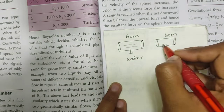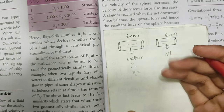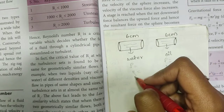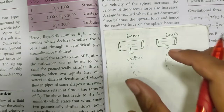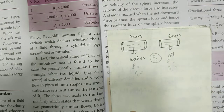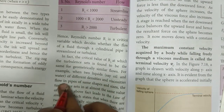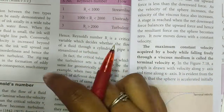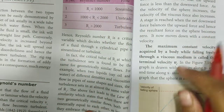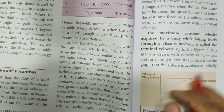One cylinder has water flow and the other has oil flow. Water and oil have different densities and different coefficients of viscosity. However, when two liquids such as oil and water of different densities and viscosities flow in pipes of the same shape and size, they have essentially the same Reynolds number value.